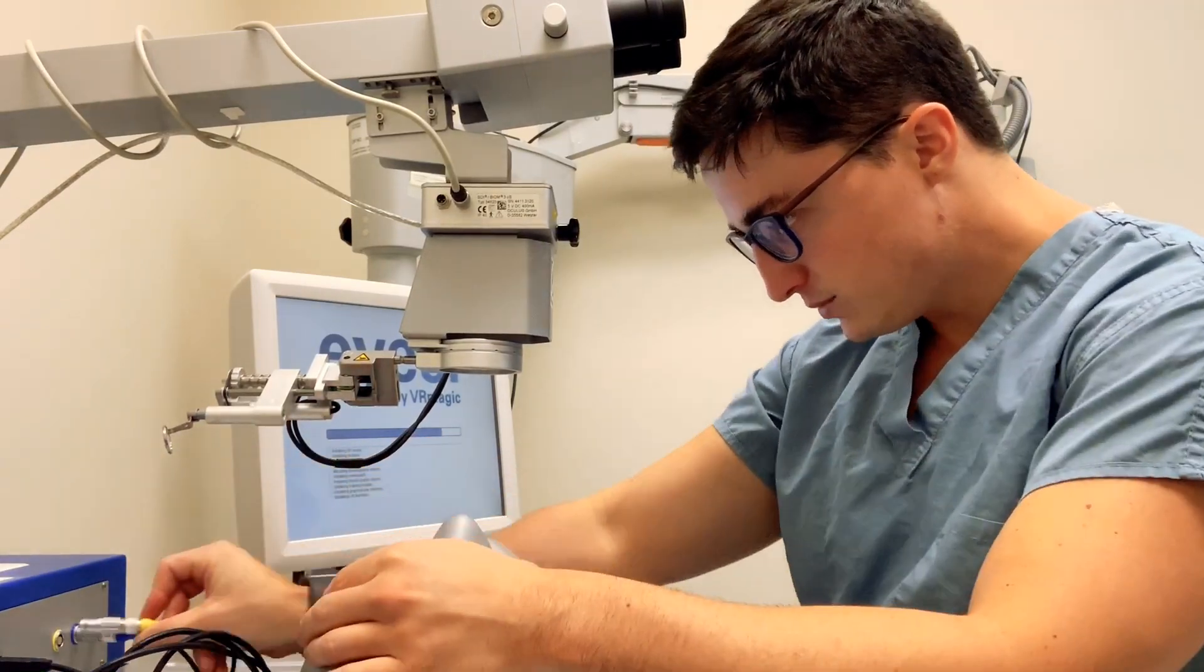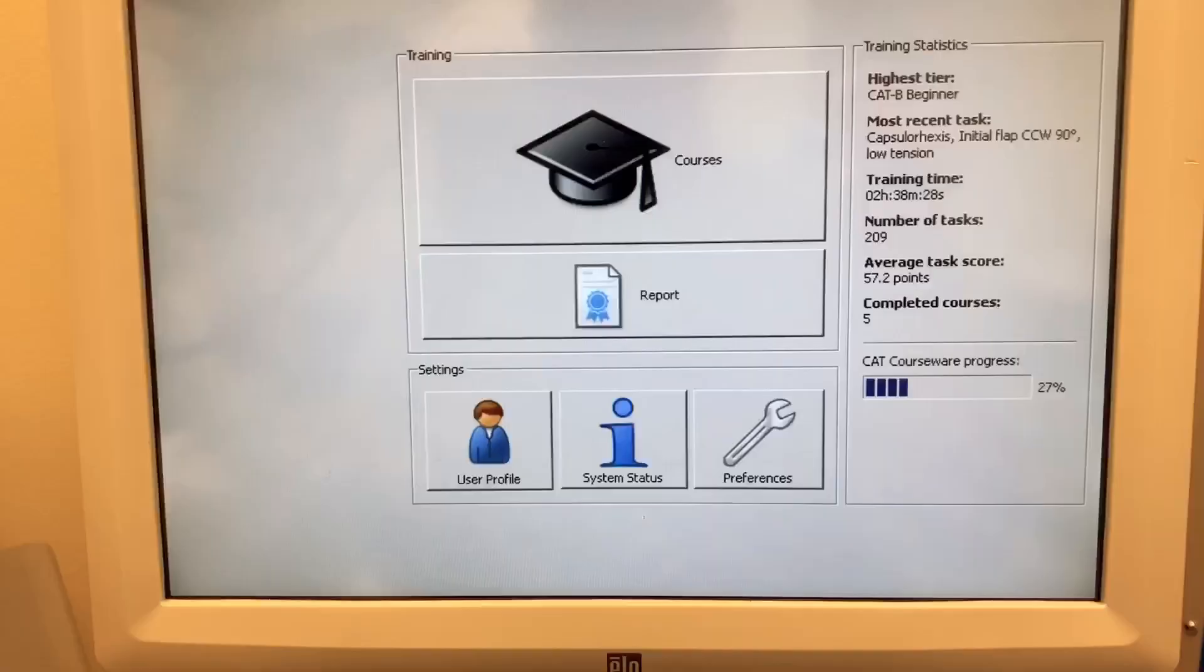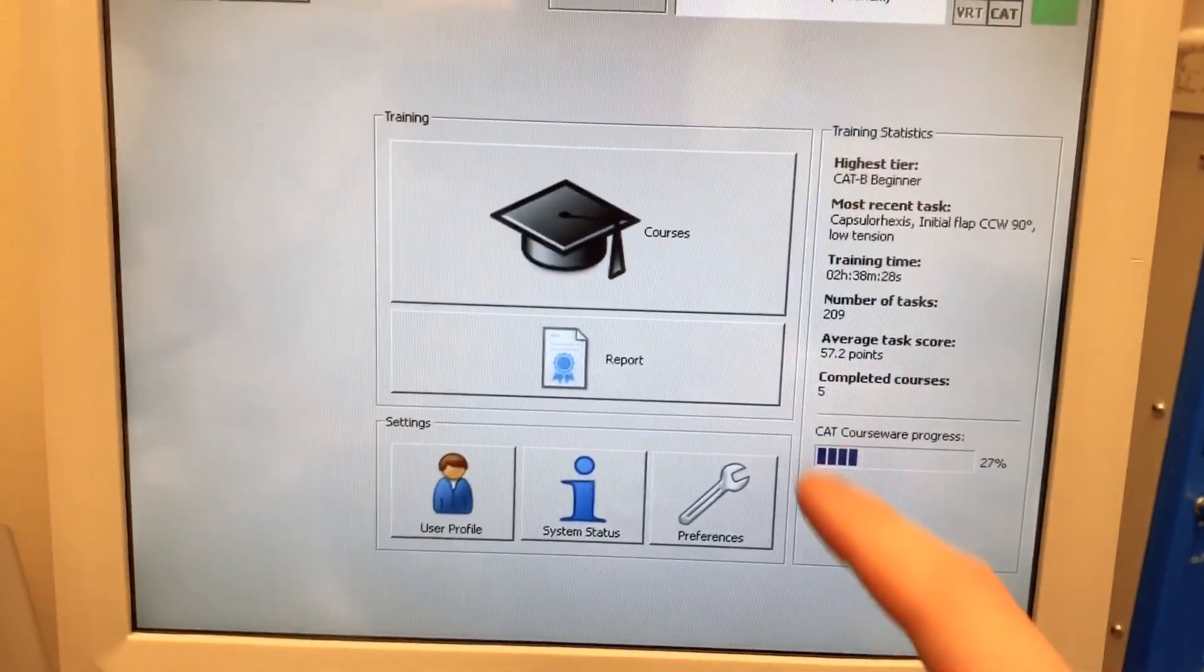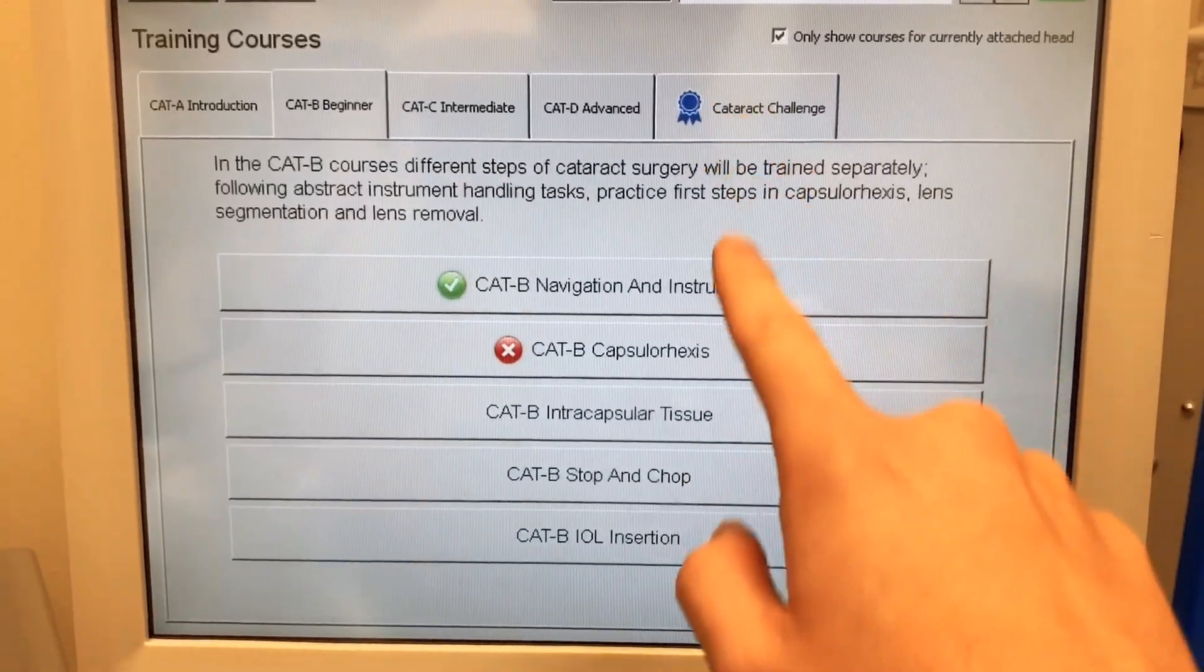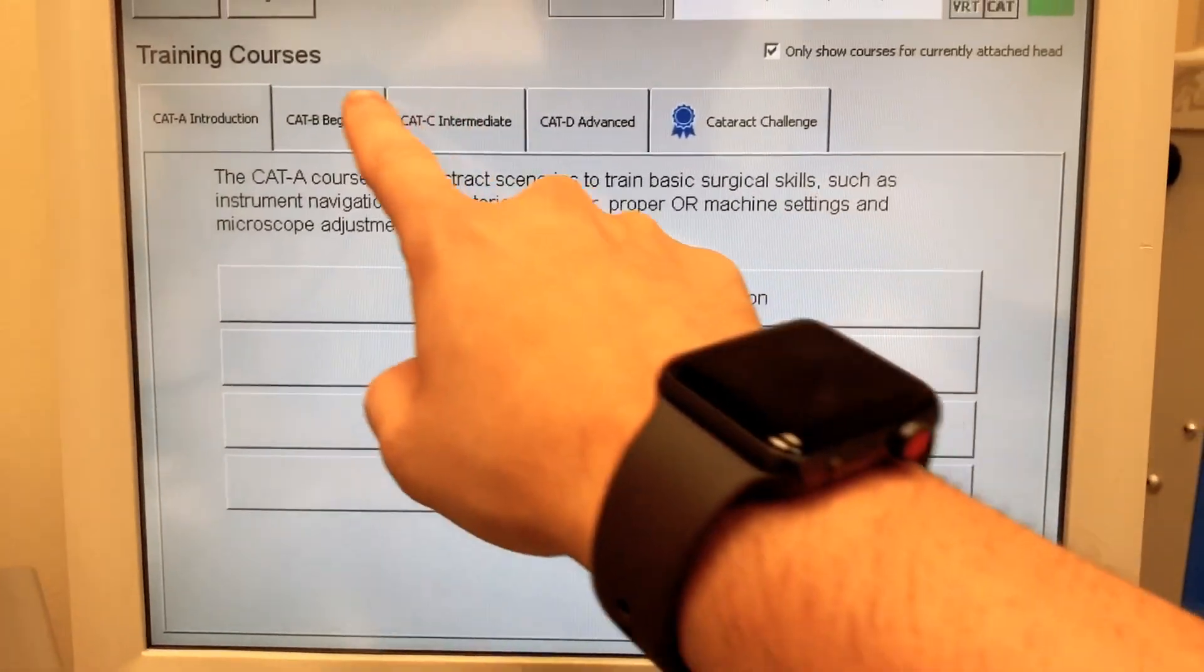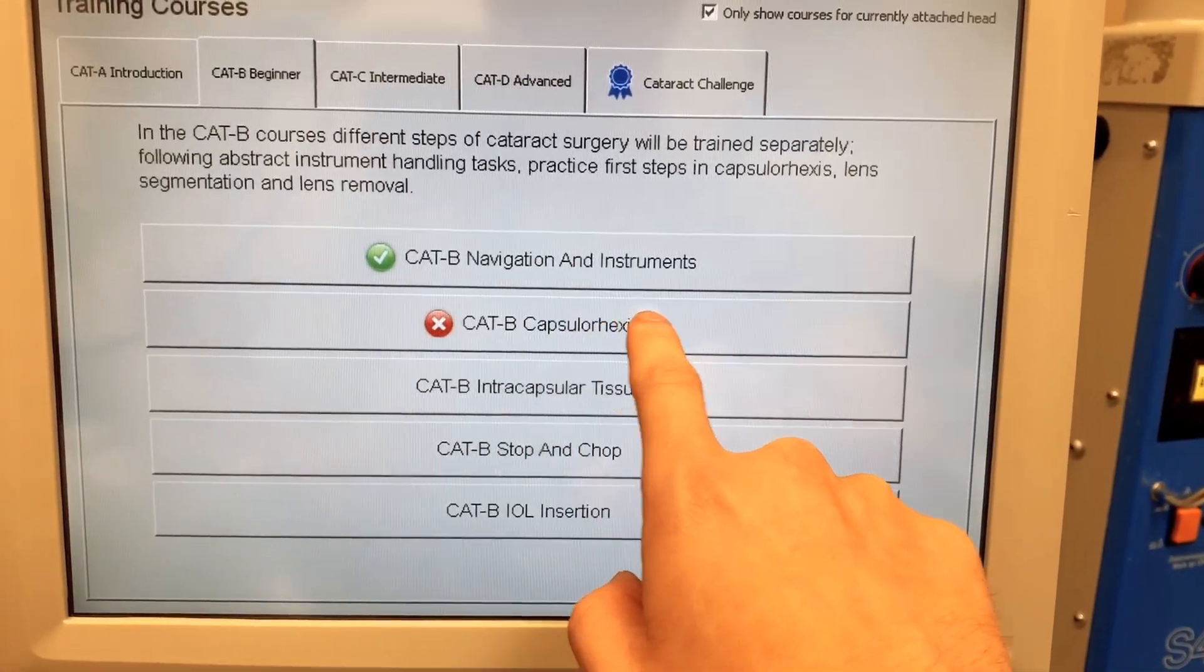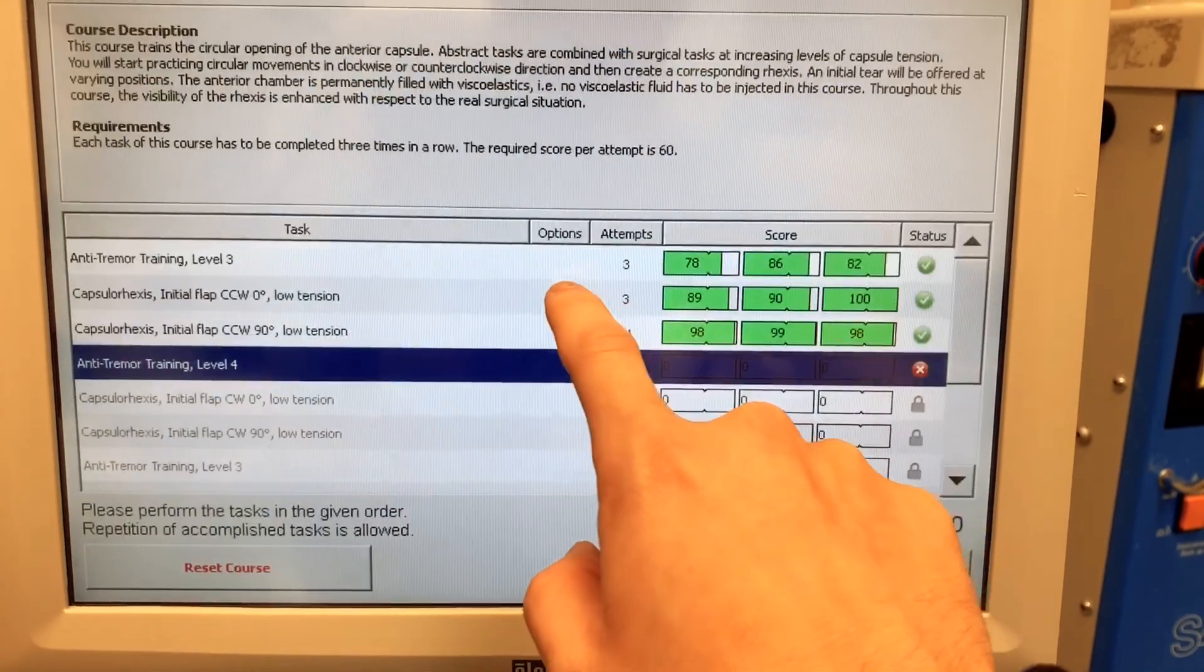So we'll go ahead and plug these into the system. There's two boxes of these, ones for retinal surgery, ones for cataract surgery. We're doing the one for cataract surgery today. So we pull up the module here. We go to courses. It's under my name. So already completed the introductory courses and then we go to the category B for beginner and I've already done part of it.